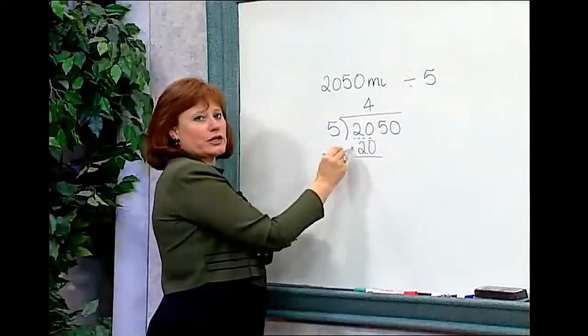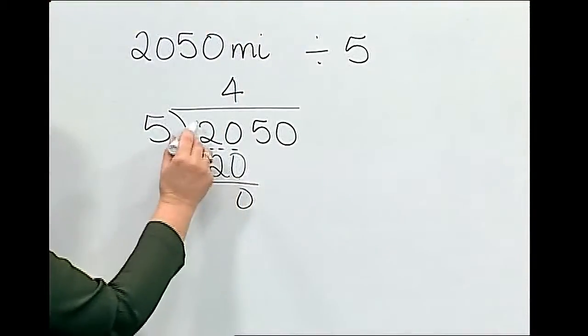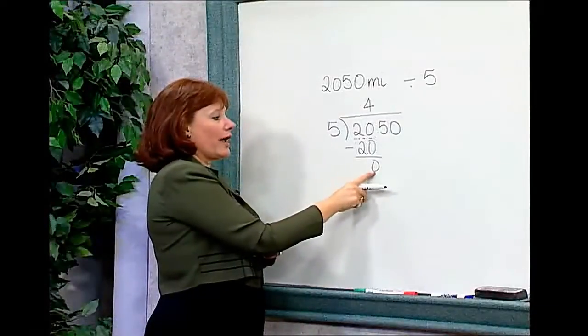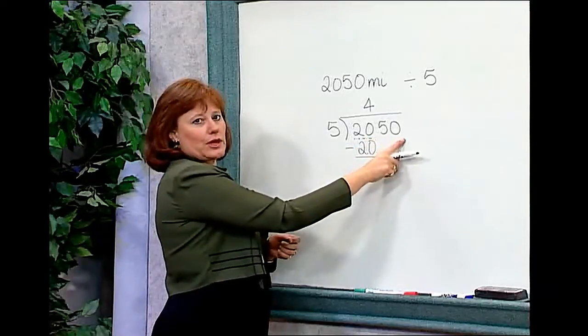When I do my subtraction step, it comes out exactly to be zero. Zero minus zero is zero. Two minus two is zero as well. Even though I have a zero in the problem, that doesn't mean I'm done. I'm far from done because I still have to use these two numbers.